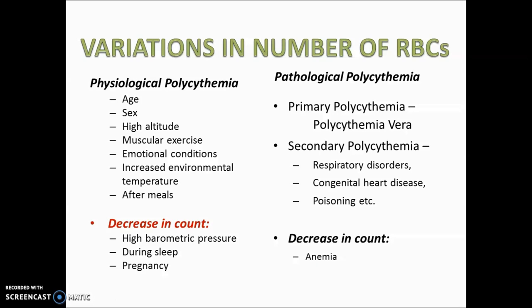Polycythemia means an increase in RBC count and can be physiological — in conditions like high altitude, muscular exercise, emotional states, high temperature, and after meals — or pathological, as primary or secondary polycythemia. Secondary polycythemia occurs due to respiratory disorders, congenital heart disease, and poisoning. Decreased RBC count occurs physiologically at high barometric pressure, during sleep, and in pregnancy, and pathologically in anemia.